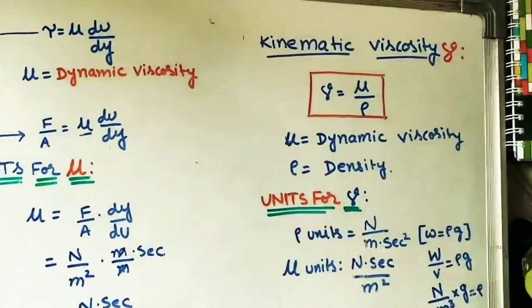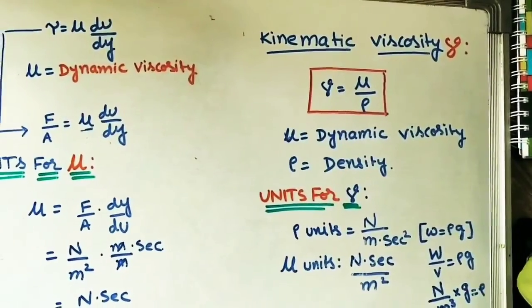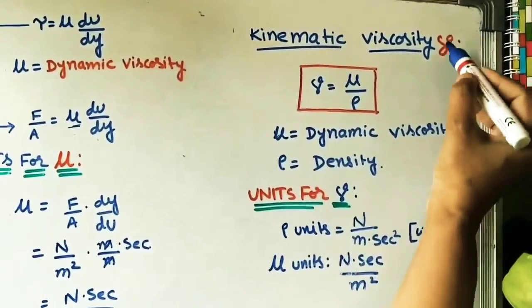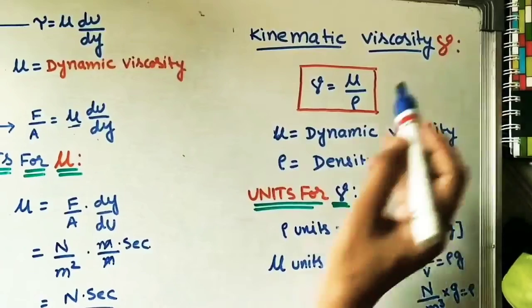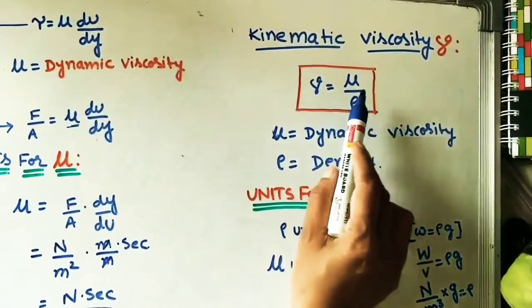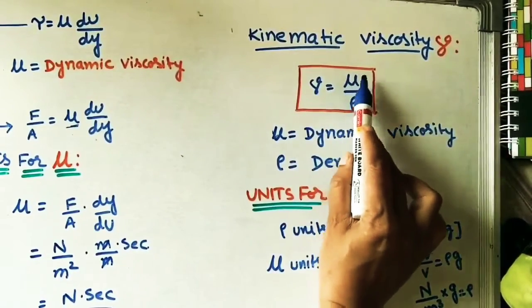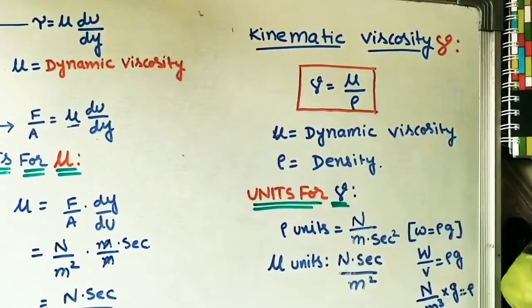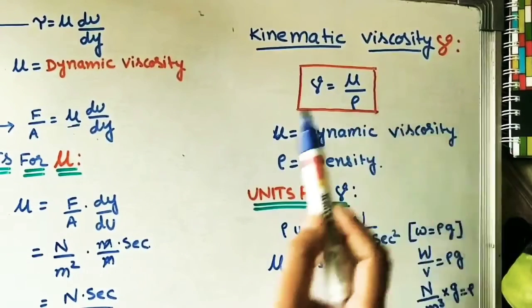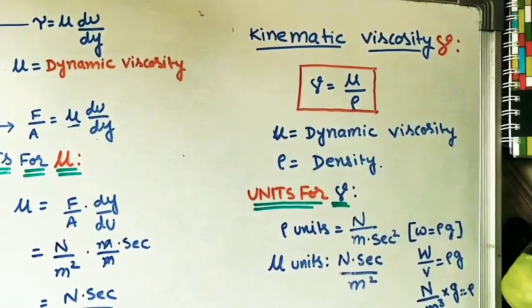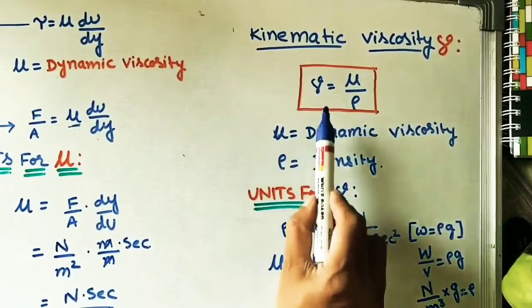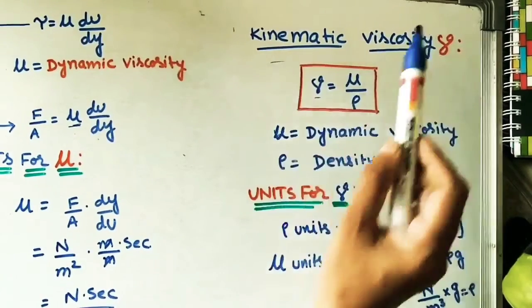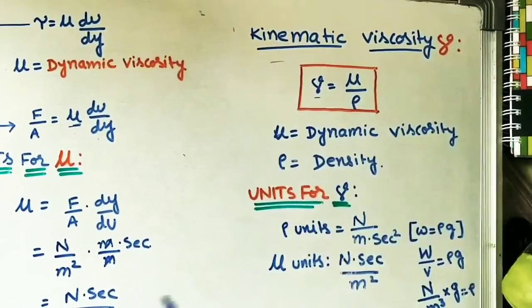In some problems, kinematic viscosity is given, denoted by nu (ν). Kinematic viscosity is the ratio of dynamic viscosity to the density of the given fluid. Both are properties of the given fluid. We need to find the units for nu.